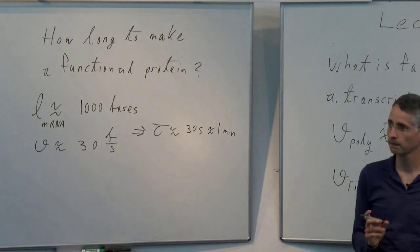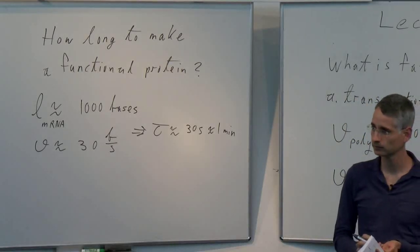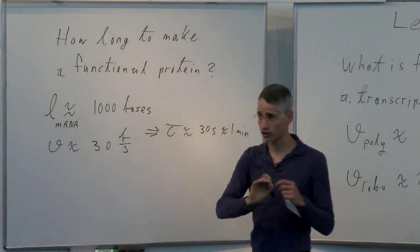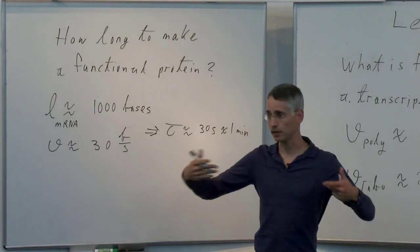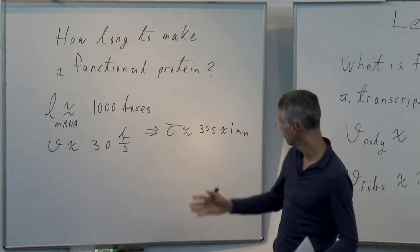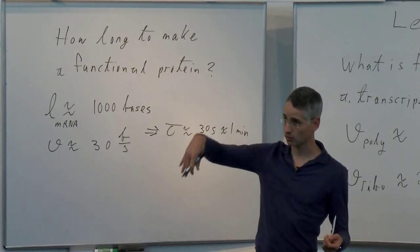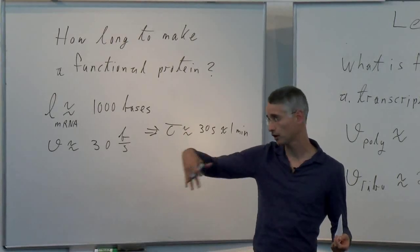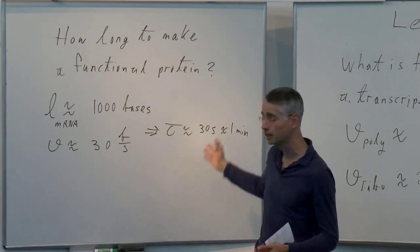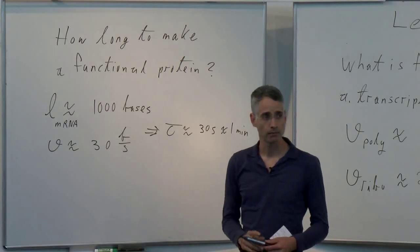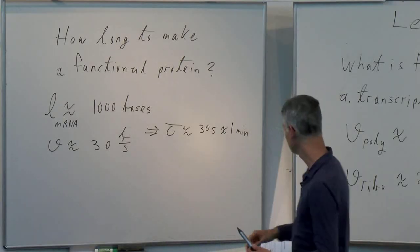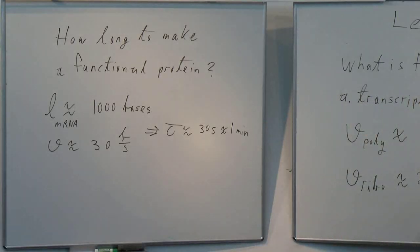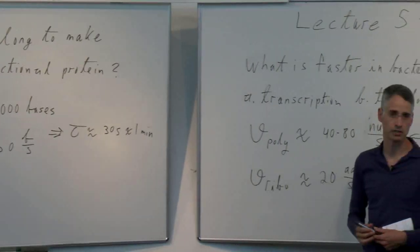In bacteria with polycistronic mRNAs, for the first gene it would be roughly that delay. For others it depends on ribosome binding site placement. If introns are present in eukaryotes, it could be way longer depending on how many introns and the organism's slower transcription rate.